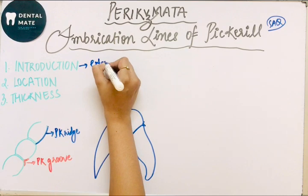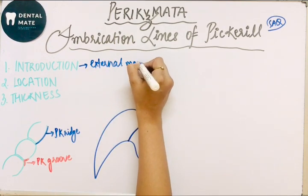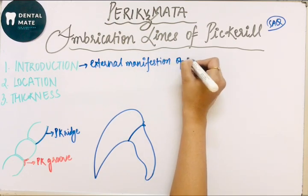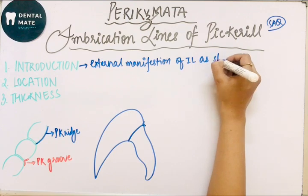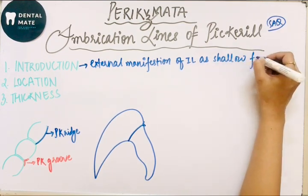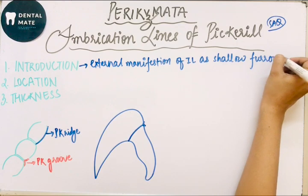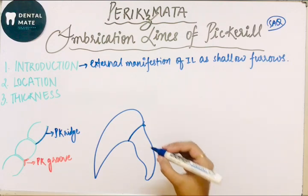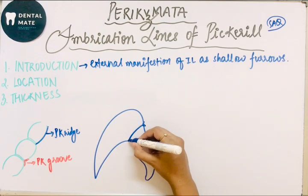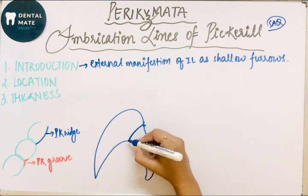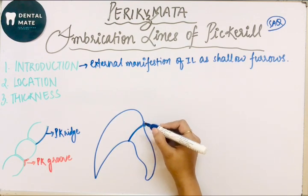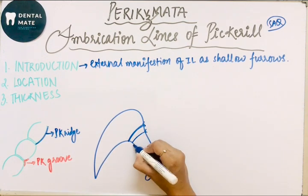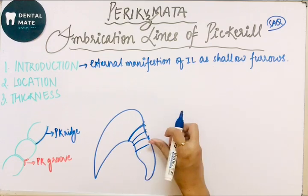This is the external manifestation of the incremental line as shallow furrows. The incremental line runs from the dentino-enamel junction in an oblique direction to the surface, meeting the surface obliquely.